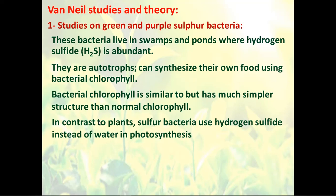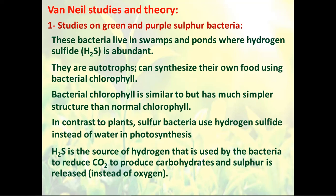Bacterial chlorophyll is very similar to plant chlorophyll, but it is simpler, yet does the same job. What Van Neel found is that the bacteria used hydrogen sulfide instead of water to reduce the carbon dioxide, to produce carbohydrates, and instead of water evolving, he found that there is sulfur precipitating.